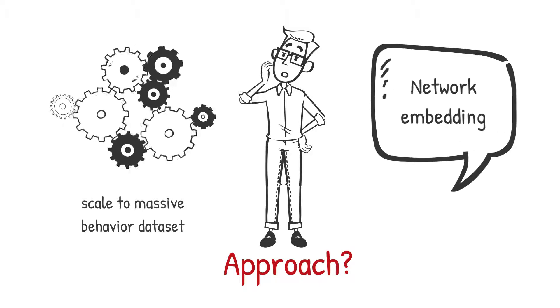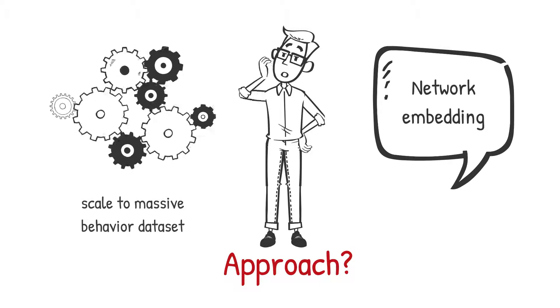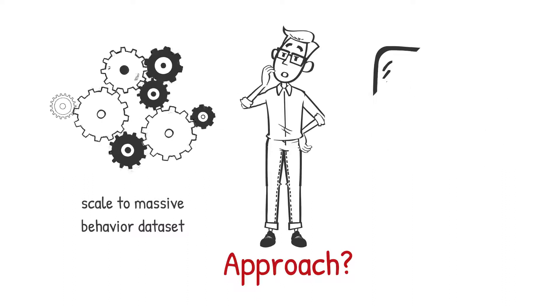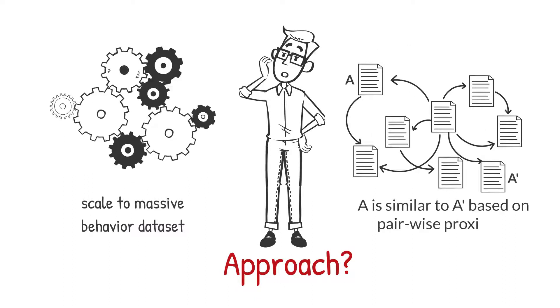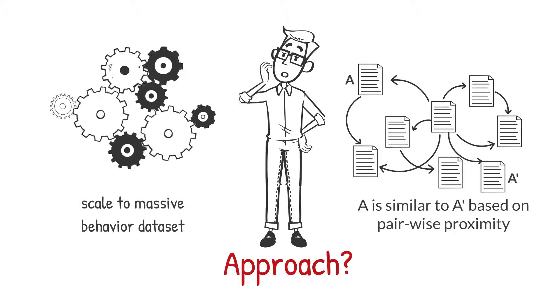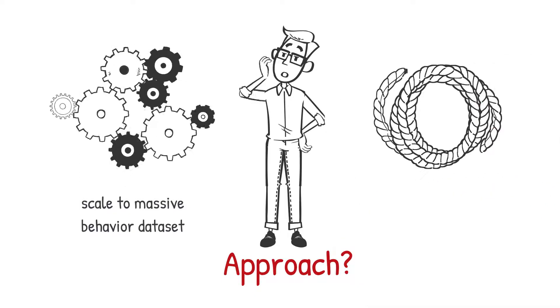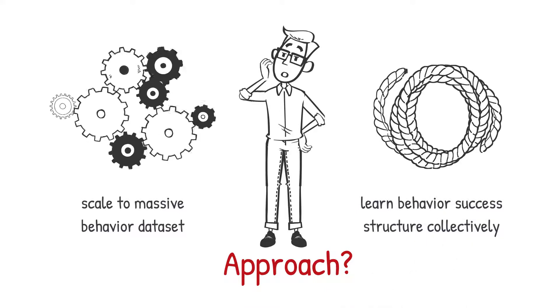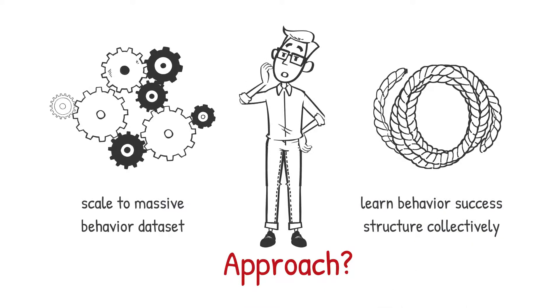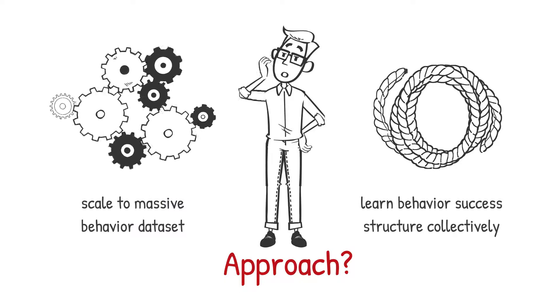How about we put context items into a network so that we can use network embedding methods? One problem is that these methods are designed for similarity search based on the notion of pairwise proximity. What we need is to learn the structure of success collectively, which means we are looking for complementary co-authors, but not necessarily similar to ourselves.